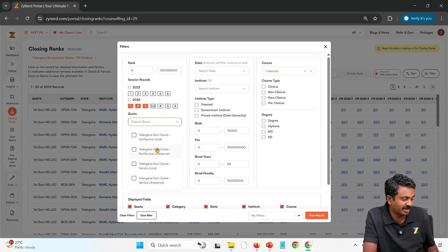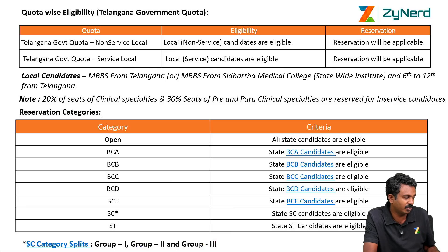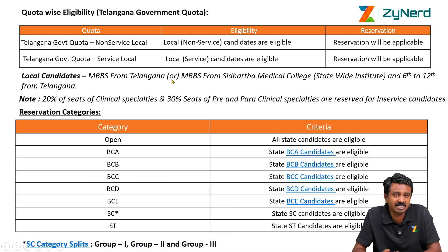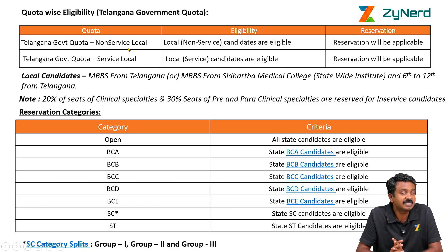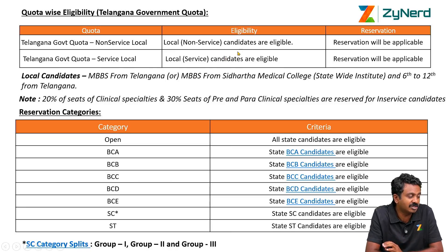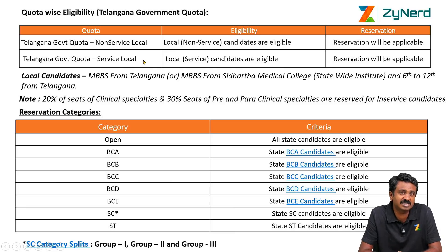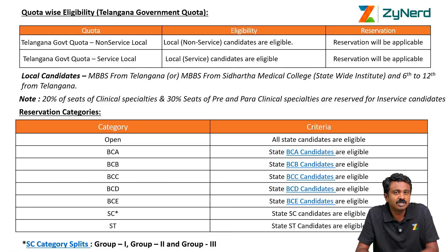There are only 4 quotas available. Which one should you select? Right now it is very simple as far as Telangana's allotments are concerned. Telangana government quota had non-service local and service local. These are the two categories available in 2024.